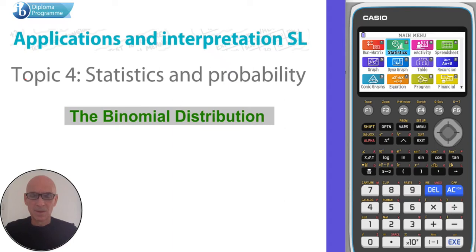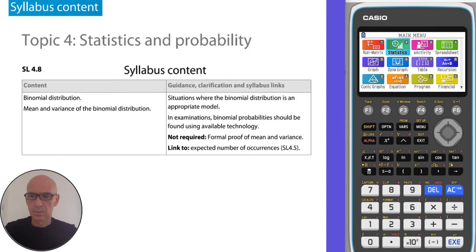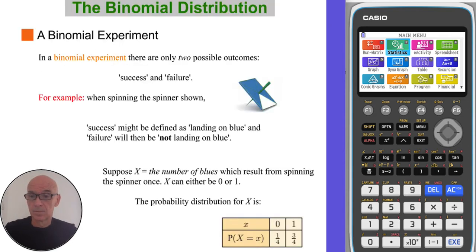Hello, this video is on the binomial distribution, as shown in the syllabus. In a binomial experiment there are only two possible outcomes: success and failure.